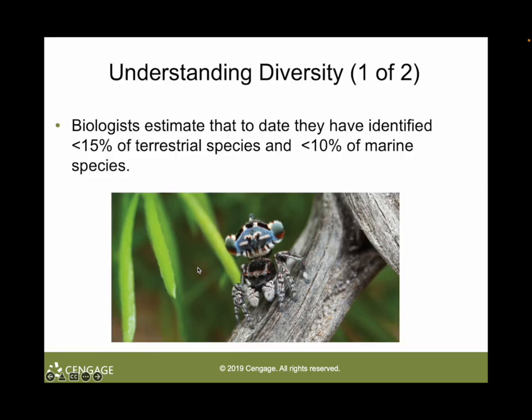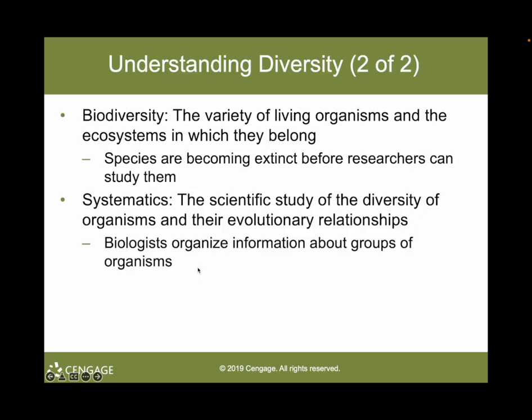Biologists estimate today that they have identified less than 15% of the terrestrial species and less than 10% of all marine species. In other words, diversity abounds. Given that, let's get to classifying organisms. Biodiversity is that variety of living organisms and the ecosystems in which they belong.